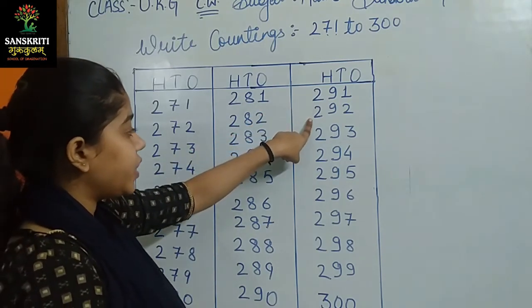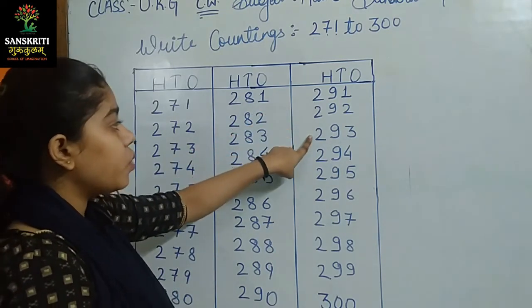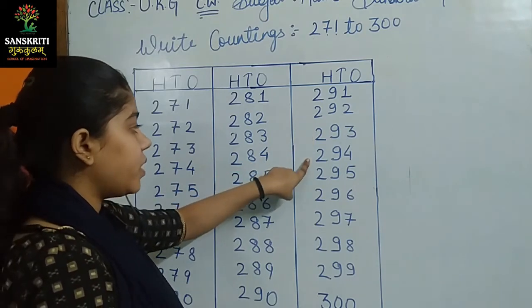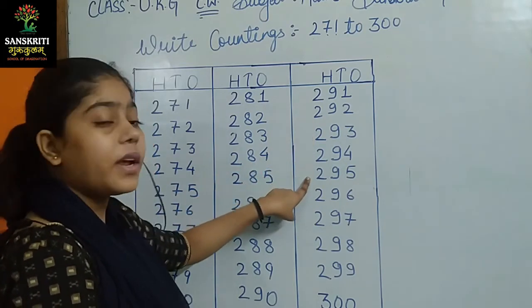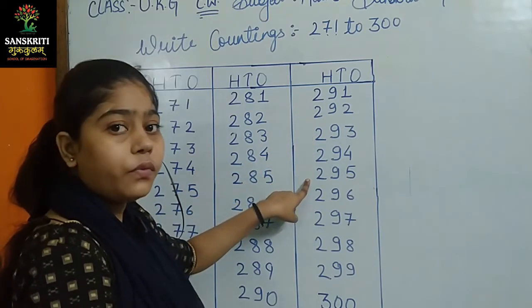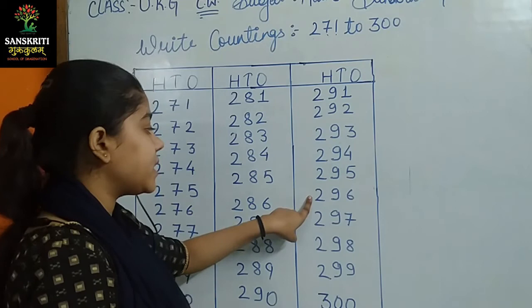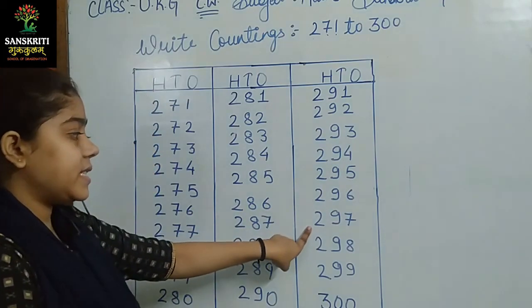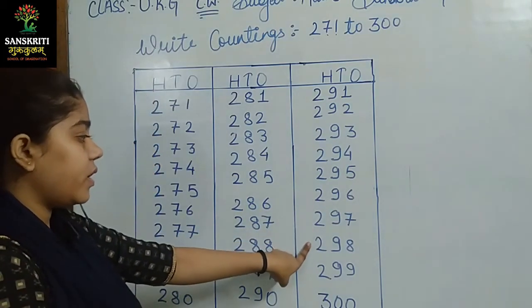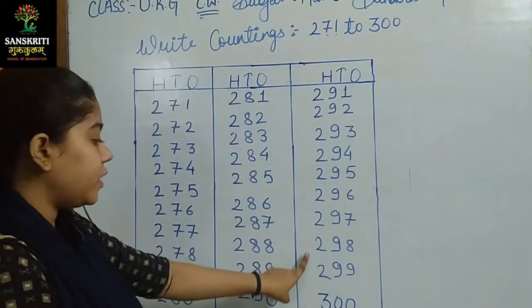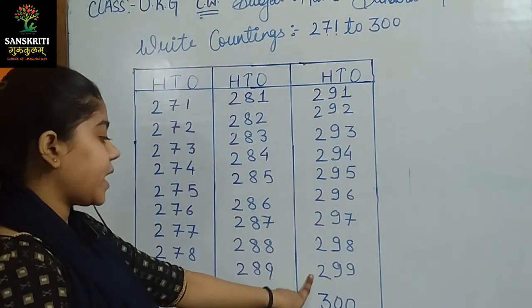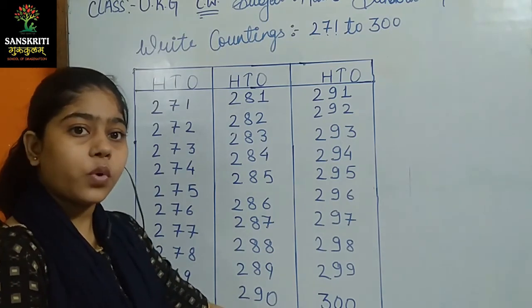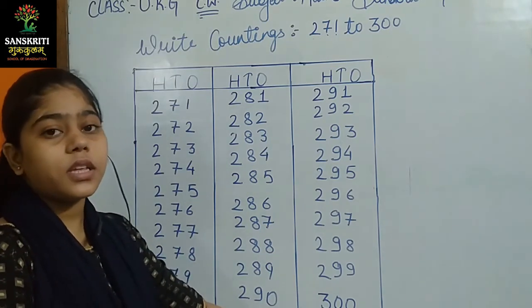290 के बाद 291, 292, 293, 294, 295, 296, 297, 298, 299, 300.